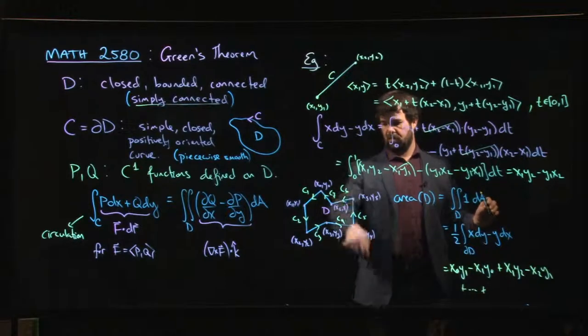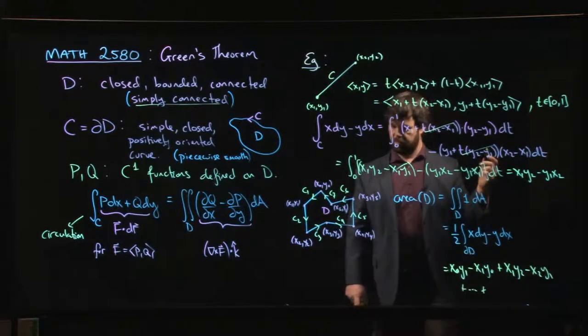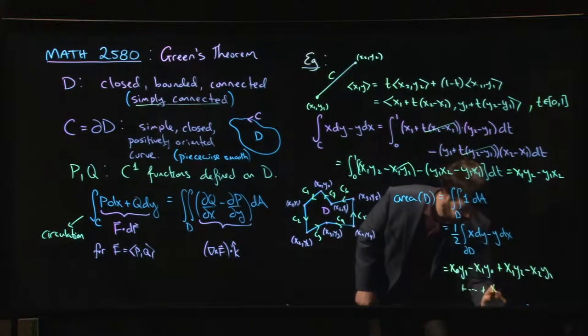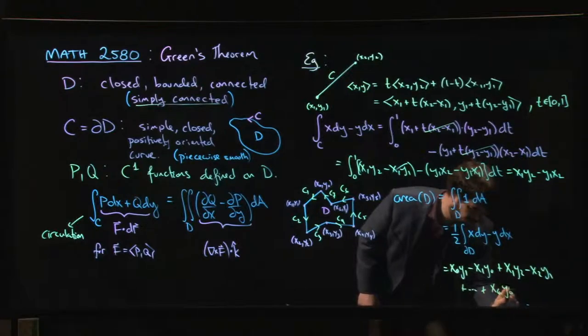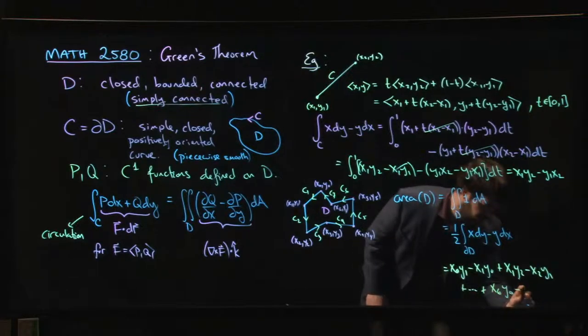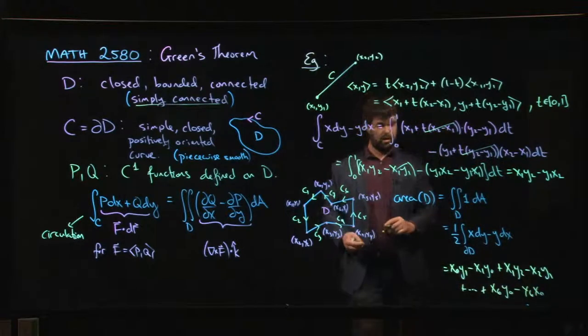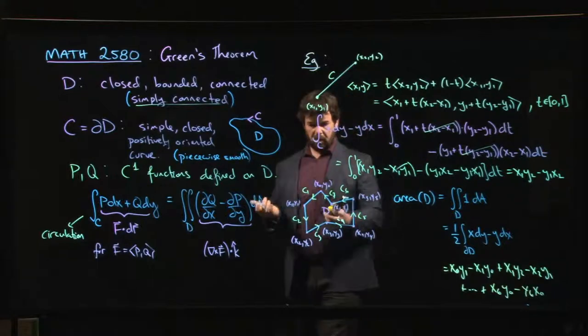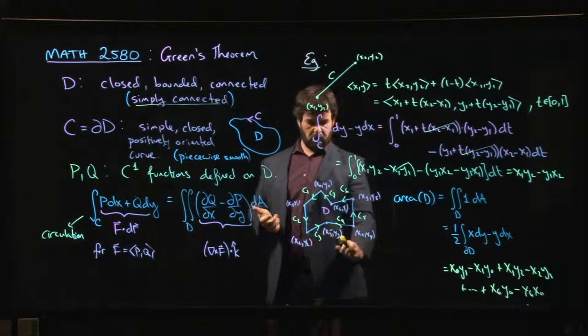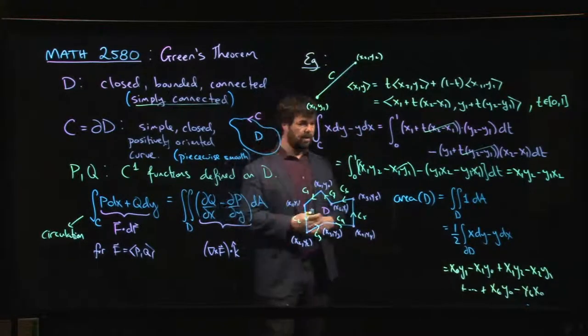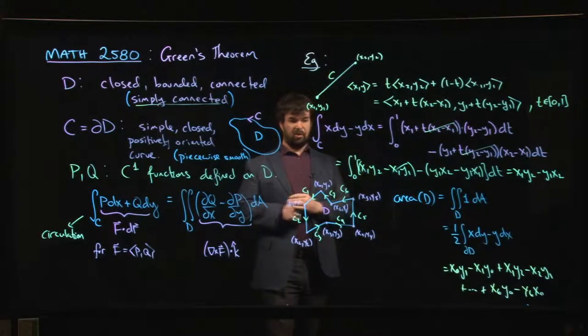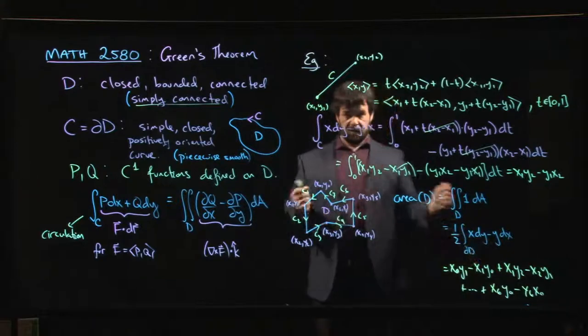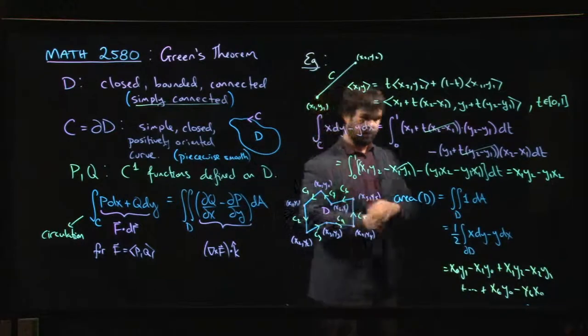Down to the very last one, which is going to be x6 y0 minus y6 x0. So you can now compute the area of, if you know the vertices, if you know all the vertices for an arbitrary polygon, you have a simple formula for computing the area. All you have to do is plug in the numbers, you've got your answer.